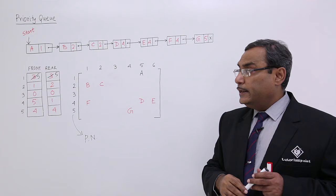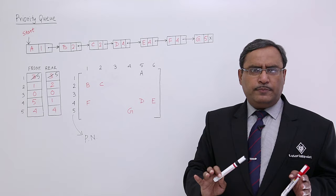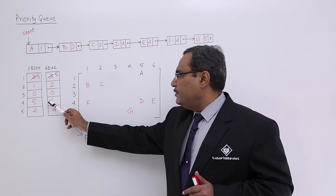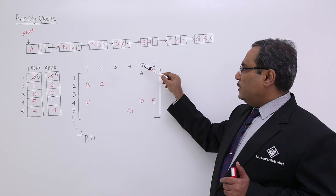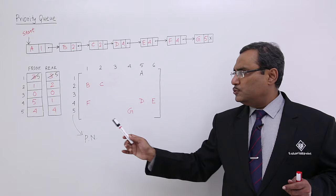With priority 4, I am having three nodes D, E, and F. Intentionally, I have written them in a circular way, so front will be 5 and rear will be 1. With priority value 5, I am having G. At priority 5, I am putting it at the 4th column, so front is equal to 4 and rear is equal to 4. I could have written it in other places as well — accordingly, the front and rear will get updated.